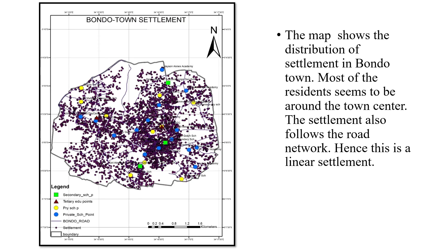The map shows the distribution of settlements in Bondo town. Most of the residents appear to be around the town center, and the settlement also follows the road network — making this more of a linear settlement. I had digitized all the buildings and settlements around the area on Google Earth imagery, then converted those polygons into points using the process previously described.